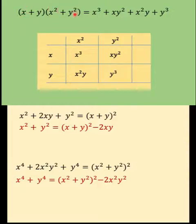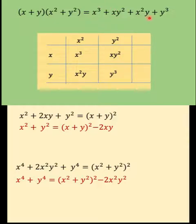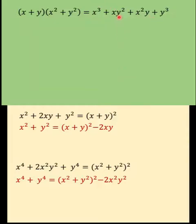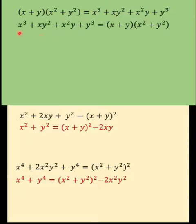The explanation is: if we distribute x to this binomial and distribute y to the binomial, the result would be x cubed plus x squared y plus xy squared plus y cubed, which is the expression on the right side. By the symmetric property, we can interchange the left and the right side, and expressing this as x cubed plus y cubed...